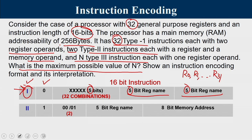For Type 2, everything where the most significant bit is 1 cannot be a Type 1 instruction. In Type 2 instructions, we specify a register operand (5 bits) and a memory operand. Since the memory is 256 bytes, we require 8 bits. So 8 plus 5 equals 13 bits are used for operands, leaving 3 bits. The most significant bit indicates it is a non-Type 1 instruction, and the remaining 2 bits — 00 and 01 — represent the 2 Type 2 instructions.